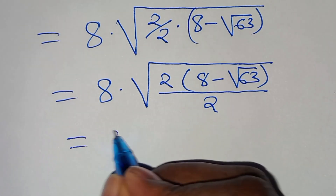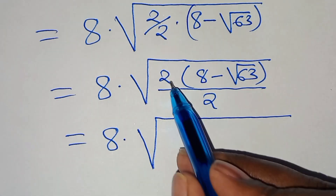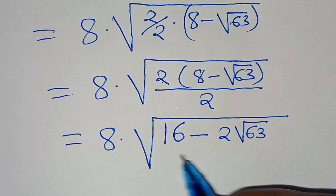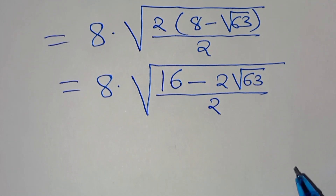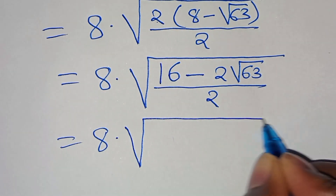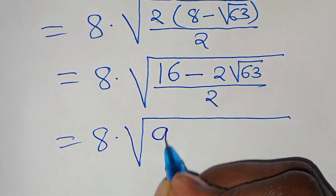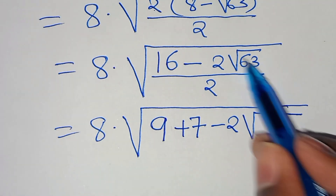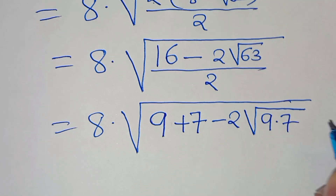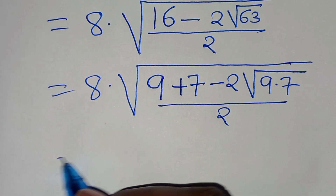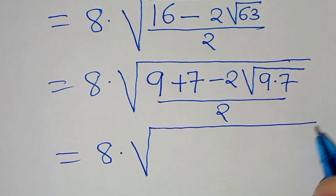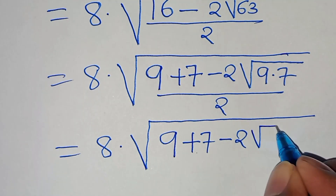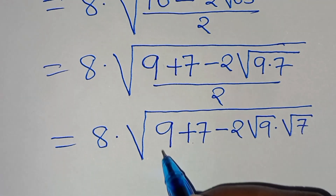The next step is that we have 8 multiplied by 8 minus square root of 63, which gives us 8 multiplied by the square root of 2 times 8, which is 16, minus 2 times 2 times square root of 63, all divided by 2. We can express 16 as 9 plus 7, and square root of 63 as square root of 9 multiplied by 7. So we have 8 multiplied by the square root of 9 plus 7 minus 2 times square root of 9 times square root of 7, all divided by 2.